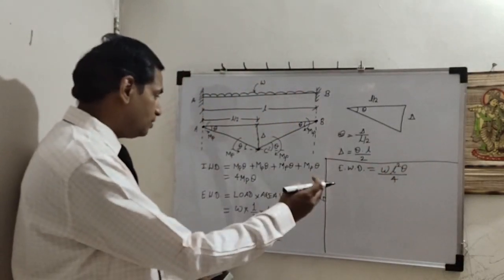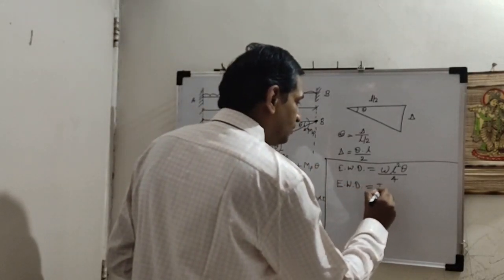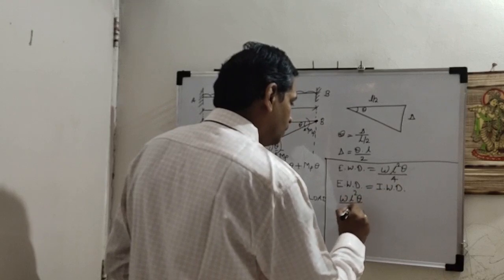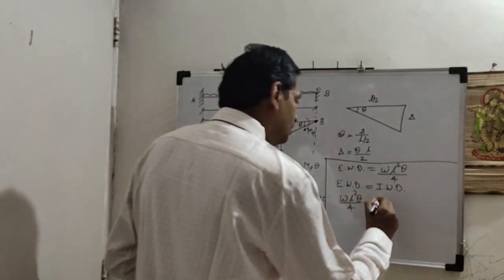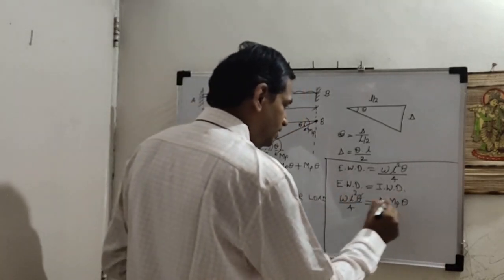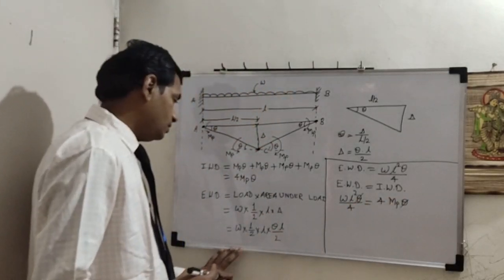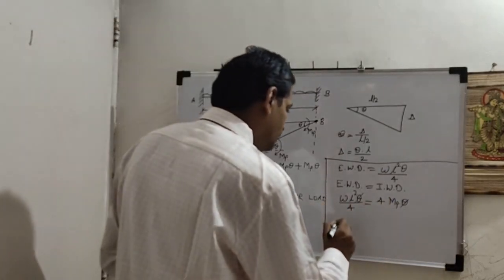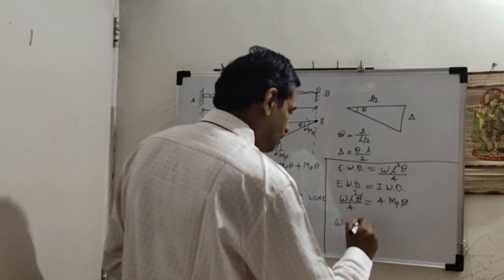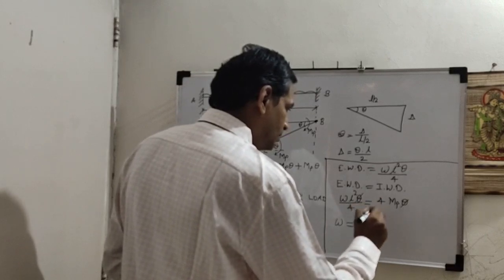External work done equals w·L²·theta upon 4. Now equate this to internal work done: w·L²·theta upon 4 equals 4·MP·theta. Theta cancels. Bringing 4 to the numerator: 4 times 4 equals 16, and L² comes to the denominator. So w equals 16·MP upon L².